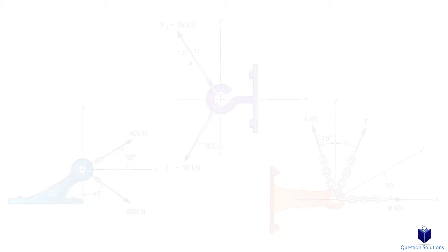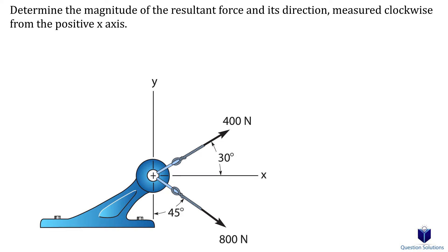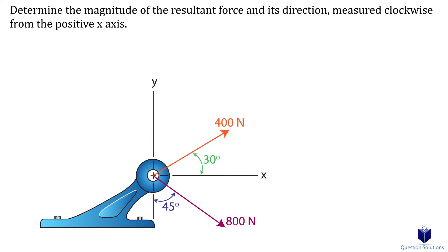Let's take a look at this problem where we have two forces applied to an object. We need to find the resultant force and its direction measured from the positive x-axis. The first step is to break down all the forces into x and y components. Let's focus on the 400 newton force and draw its x and y components, then move one to create a right angle triangle. The x component is the adjacent length and the y component is the opposite length with respect to the given angle.